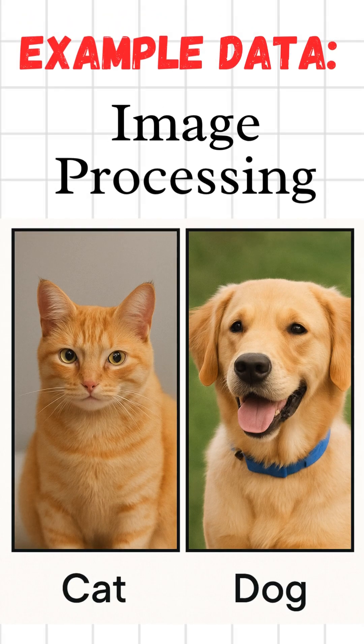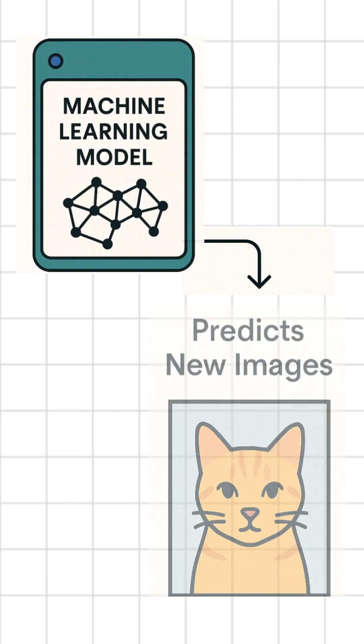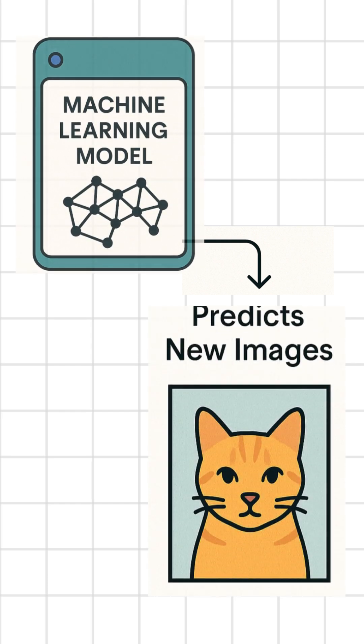We give a machine lots of examples, like pictures of cats and dogs. It trains, and then it can predict what's in a new image.